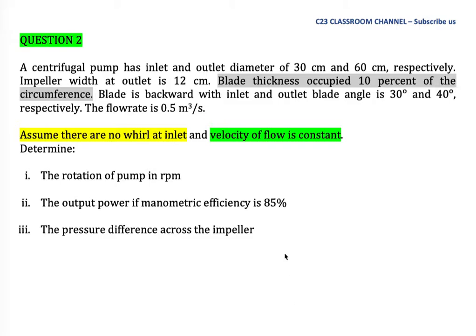A centrifugal pump has inlet and outlet diameters of 30 cm and 60 cm respectively. Impeller width at outlet is 12 cm. Blade thickness occupies 10% of the circumference. The blade is backward with inlet and outlet blade angles of 30 degrees and 40 degrees respectively. The flow rate is 0.5 m³/s. Determine the rotation of the pump in RPM, the output power if manometric efficiency is 85%, and the pressure difference across the impeller.